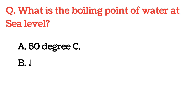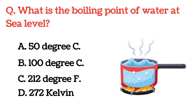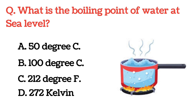What is the boiling point of water at sea level? The correct answer is: 100 degrees Celsius.